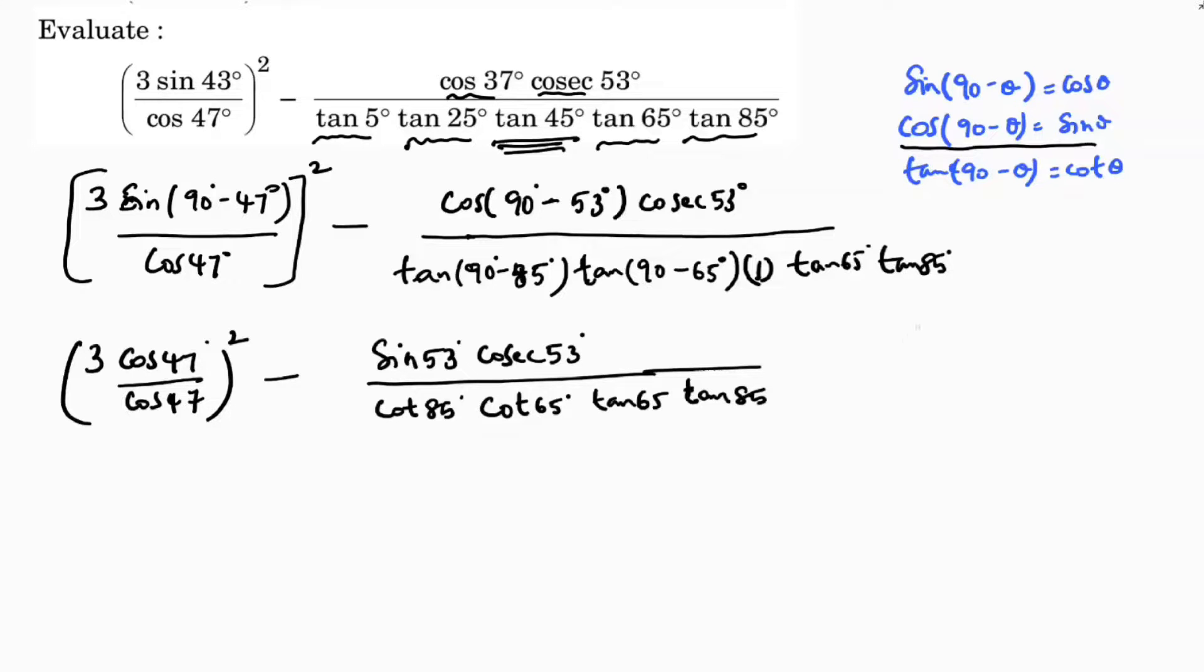If you observe the ratios, sin and cosec are reciprocal, so sin into cosec is 1. In the same way, tan theta into cot theta, because they are reciprocal, it's 1. Here cos 47 and cos 47 cancel, so it is 3 square.